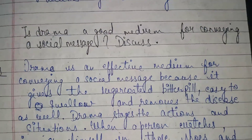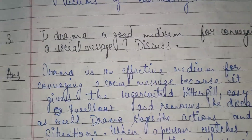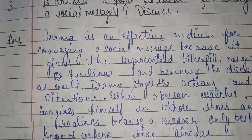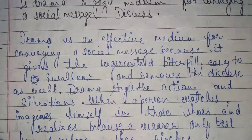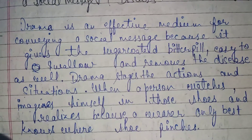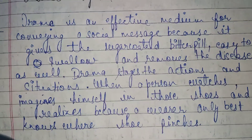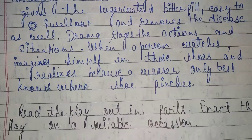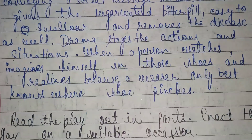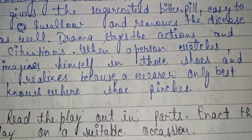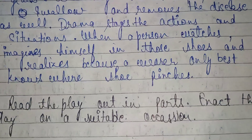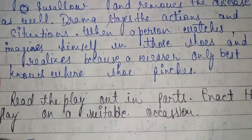Is drama a good medium for conveying a social message? The answer is: drama is an effective medium for conveying a social message because it gives a sugar-coated bitter pill, easy to swallow, and removes the disease as well. Drama stages the action and situations — when a person imagines himself in those shoes, he realizes, because a wearer only best knows where the shoe pinches.